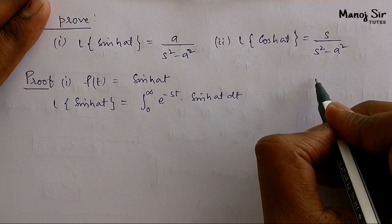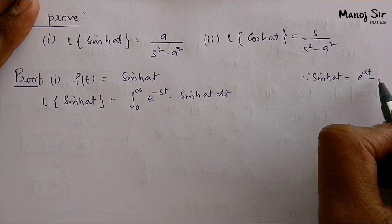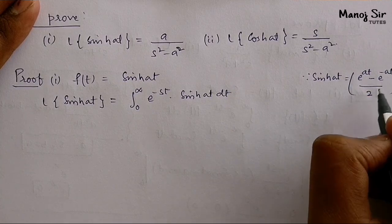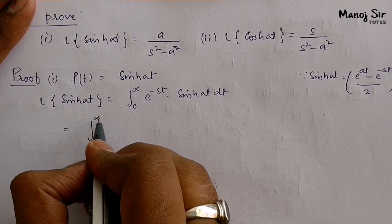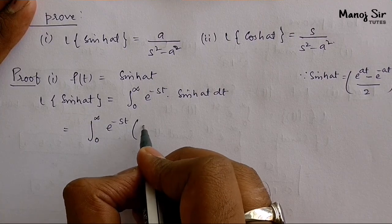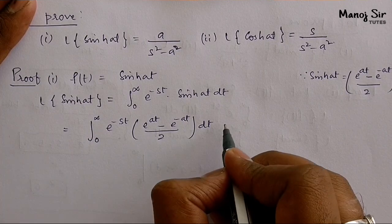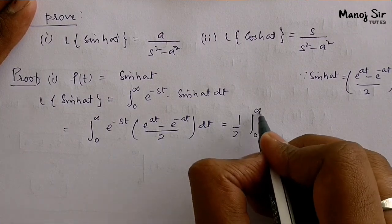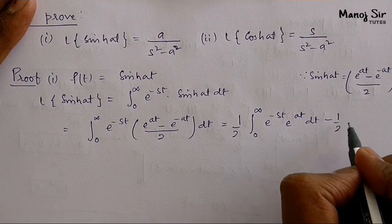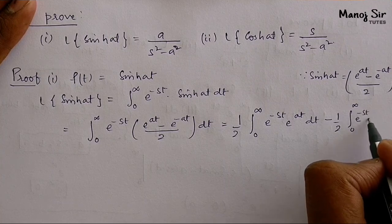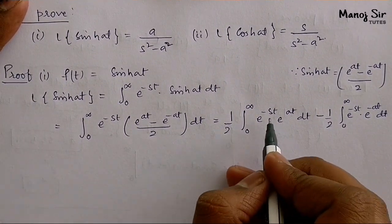You must know the formula: sine hyperbolic at equals e to the power at minus e to the power minus at, upon 2. We are going to use this formula. This equals integration from 0 to infinity of e to the power minus st, times the bracket e to the power at minus e to the power minus at upon 2, dt. Taking this half outside the integration, we get one half times the integration from 0 to infinity of e to the power minus st into e to the power at, minus e to the power minus at, dt.